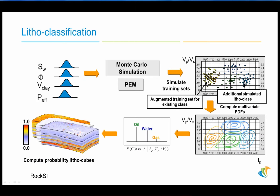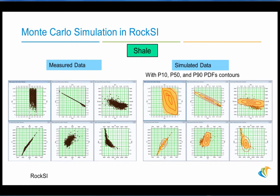Once we've done that, we can extract our probability density functions again and go through the probability process using Bayesian inference to create those probability lithocubes again. In this case, we would also have a probability lithocube for the consolidated sand or tight sand.